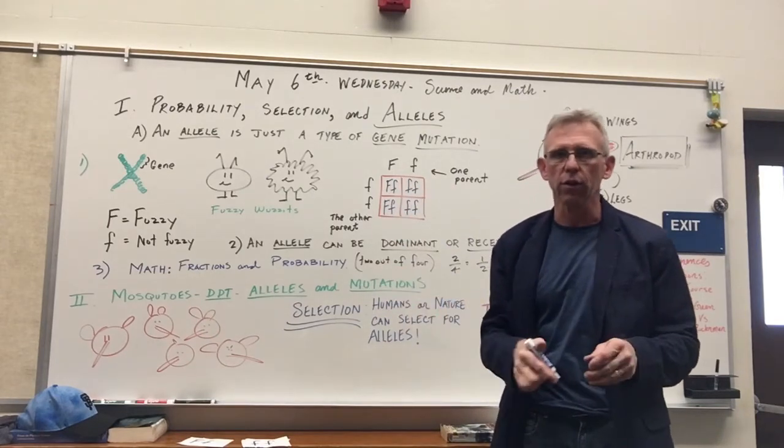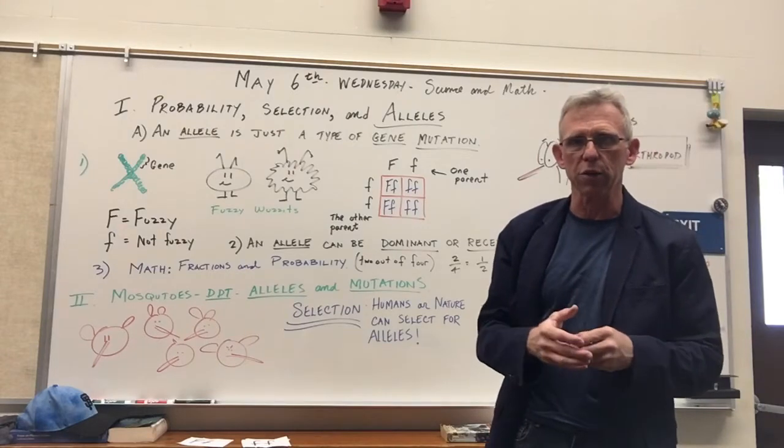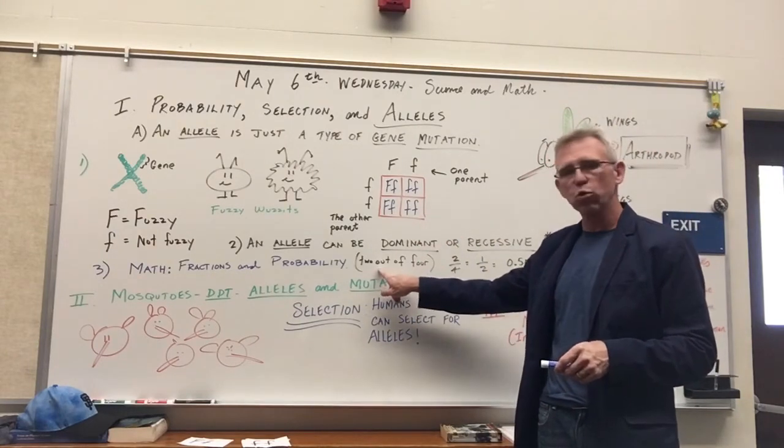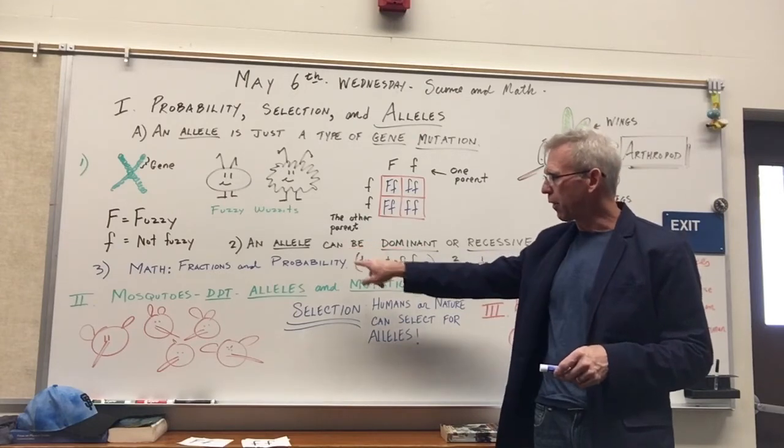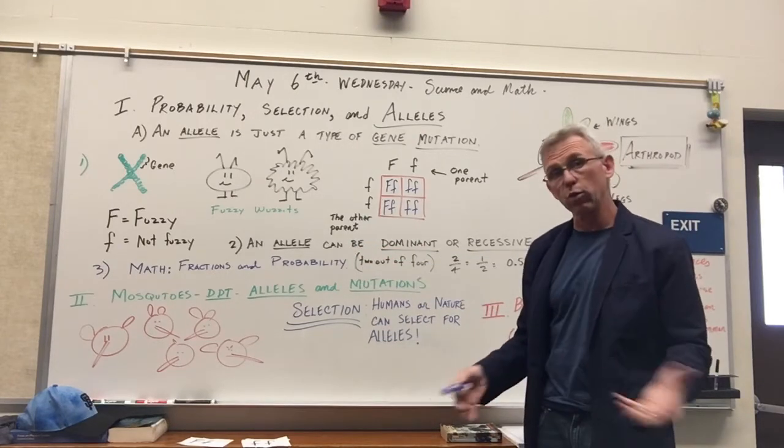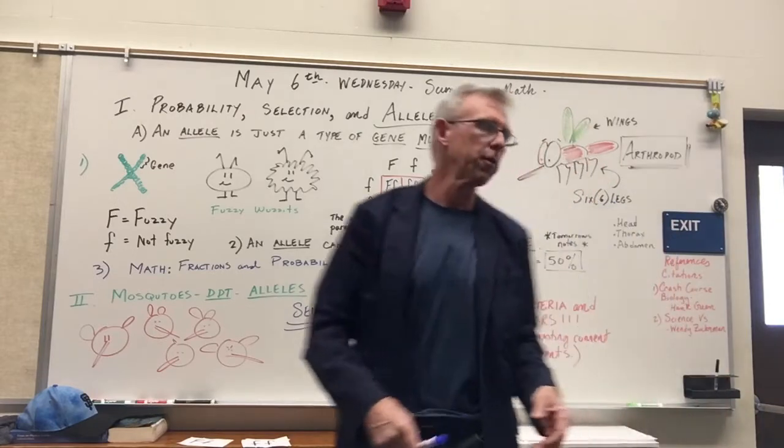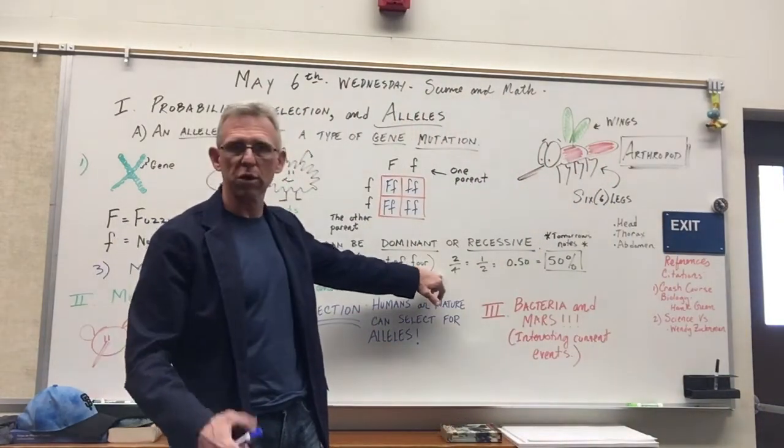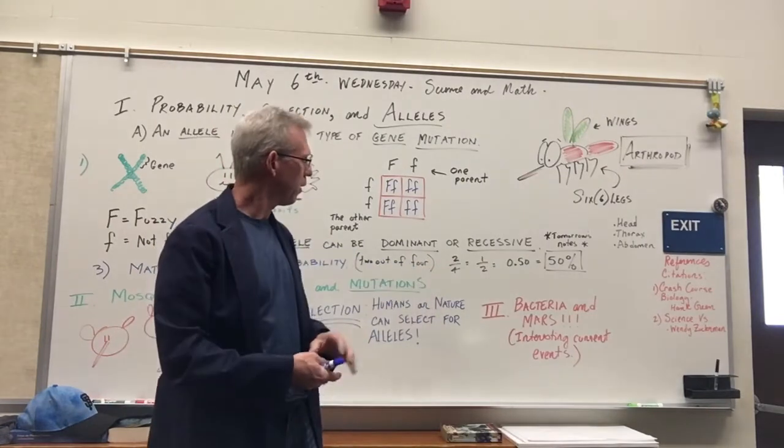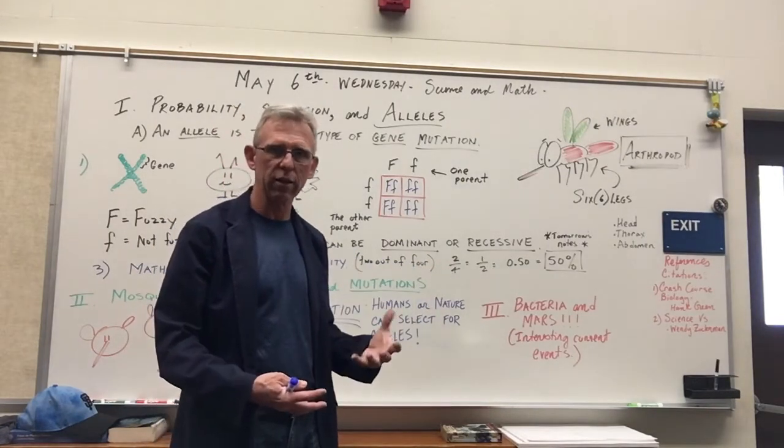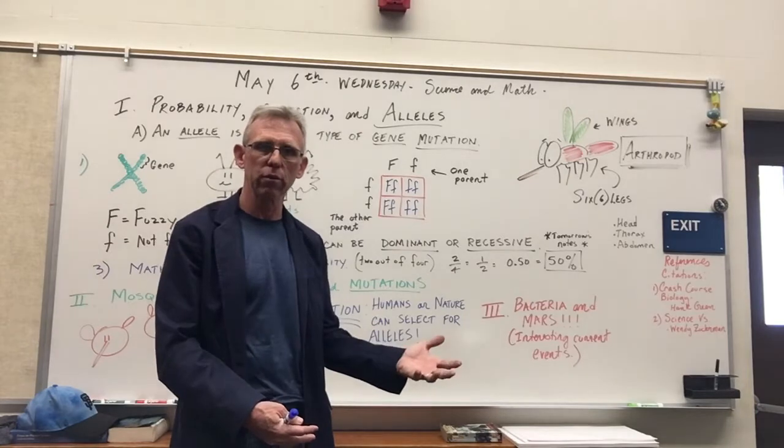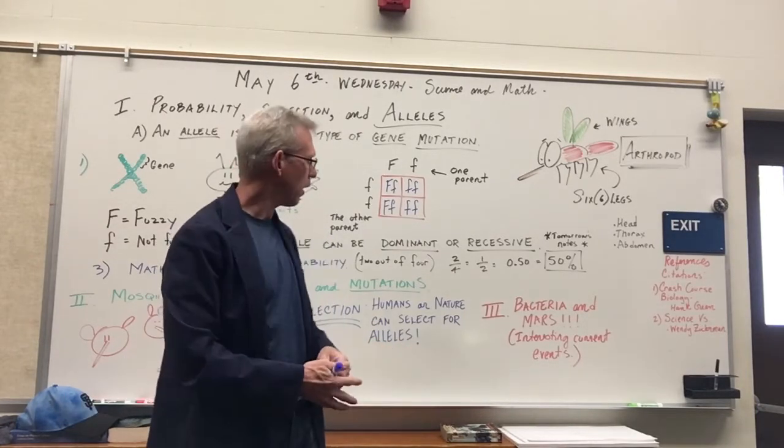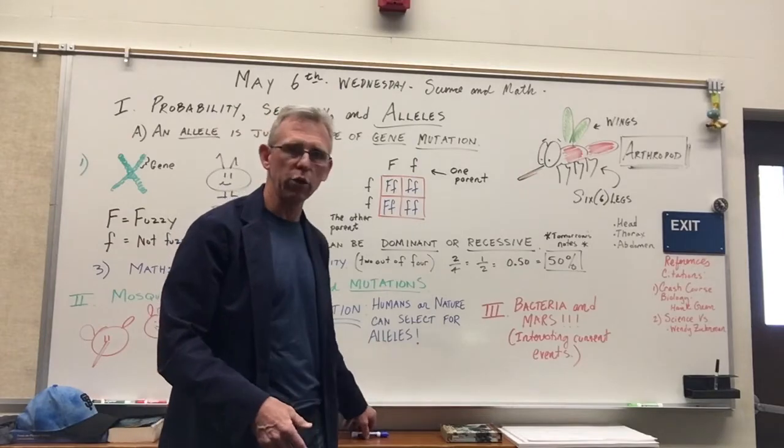Now here's the deal. Here's the interesting part about it where it comes into probability. Even though that's the probability, and the probability is worked out down here, fractions and probabilities. This is why we've been doing a lot of fractions in math class. You look at two out of four, we simplify that fraction to one half. If you're to put it in terms of percent, that would be 50% would be fuzzy. That would be offspring here, the kids. 50% would be not fuzzy. That's a one in two probability.